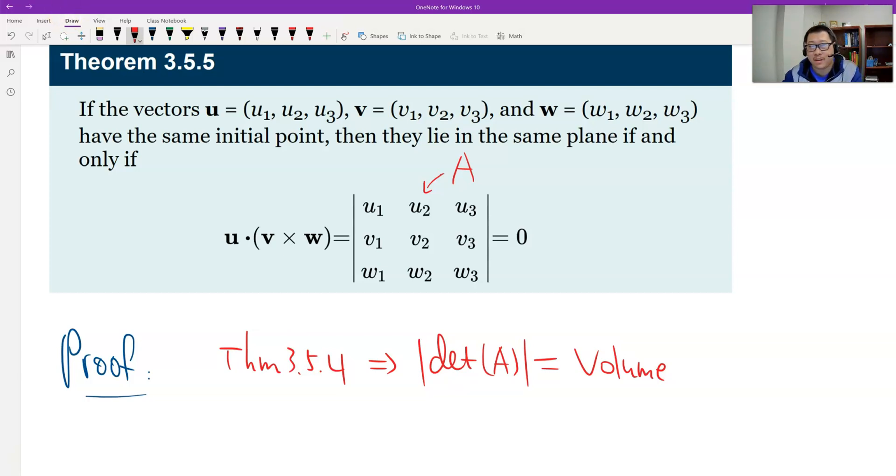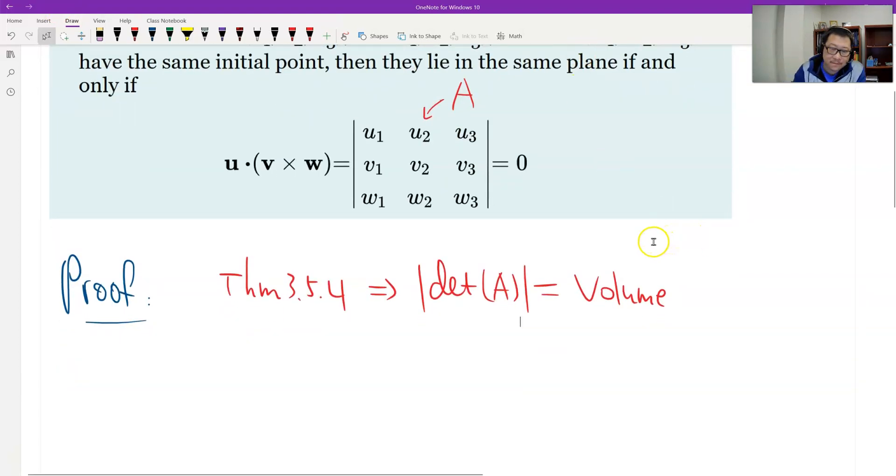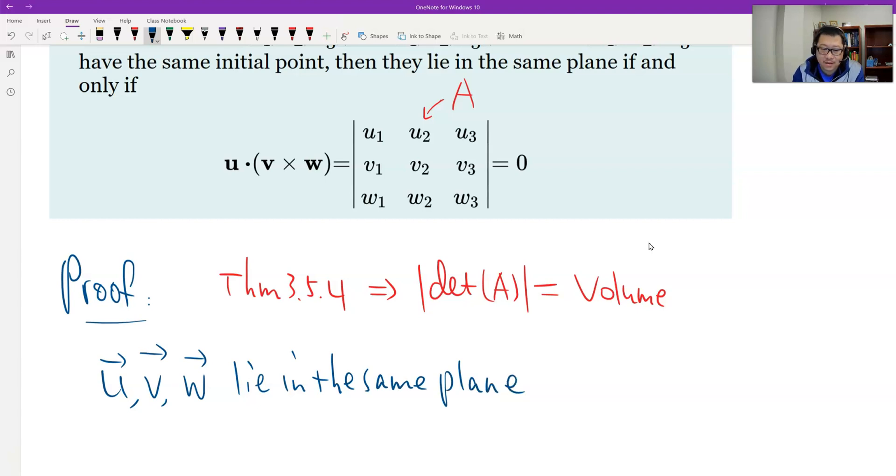And now we definitely have the results already. We just use this. Therefore, we need to say U, V, and W, these are three vectors, lie in the same plane or not. This is just equivalent to what? The volume equals zero. The volume of the parallelepiped equals zero.